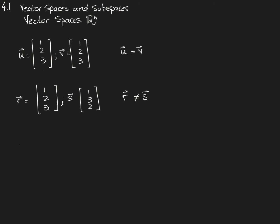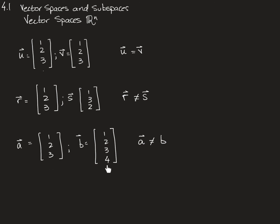Equally, if I have vectors a = [1, 2, 3] and b = [1, 2, 3, 4], those vectors are not equal. In fact, these two vectors are not even in the same vector space — this one is in R3 and this one is in R4, so we can't compare them because we don't have a fourth component in the first vector to compare with the fourth component of the other.